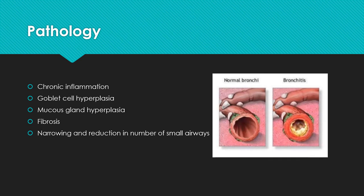In terms of the very basic pathology, you see things like chronic inflammation throughout the lungs. There's hyperplasia of the goblet cells and mucous glands — that's why you get people with COPD always having a productive cough, bringing up white phlegm. There's also fibrosis and scar tissue formation throughout the lungs, and a narrowing and reduction in the number of small airways. So there are a number of processes basically destroying the lungs' ability to function properly.